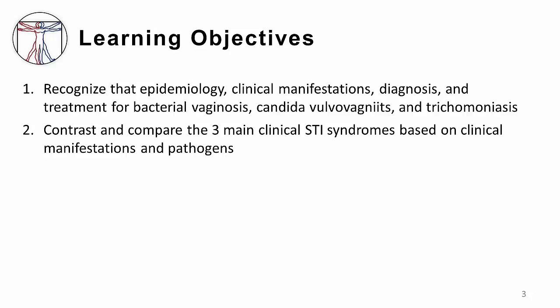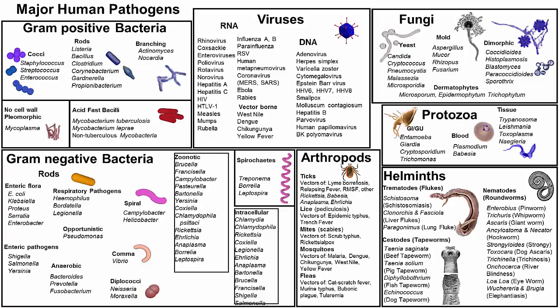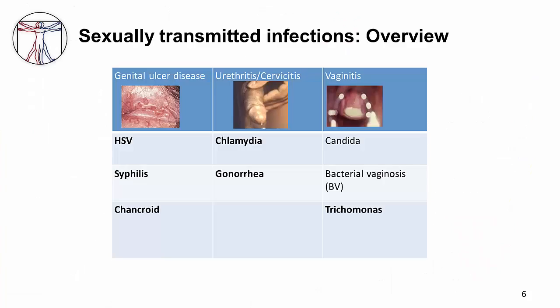These are our learning objectives for this module. Once again, we will review the organizational framework which will guide you throughout the whole section on SDIs. In this section, we will explore the causes of vaginitis, the third box of three boxes in which all SDIs fit. We will review candida, bacterial vaginosis or BV, and trichomonas, even though trichomonas is the only true SDI in this group. Once again, our favorite pathogen map — we are here today in the red — and our three boxes, with our focus today on vaginitis.